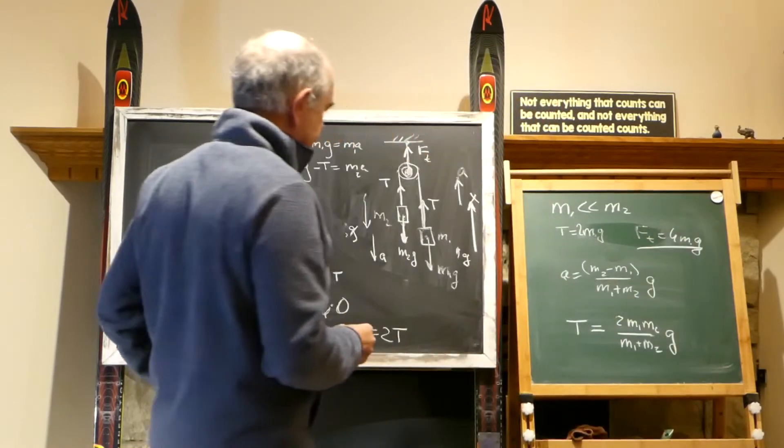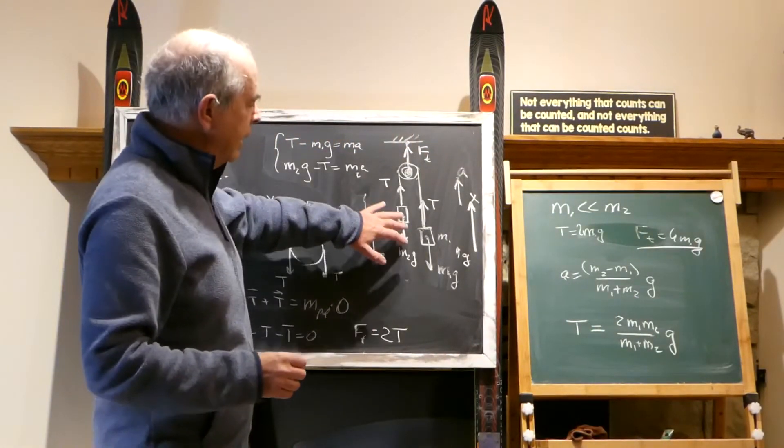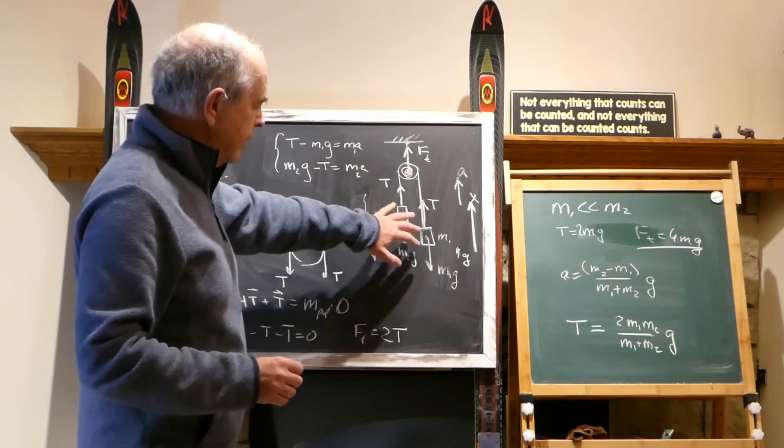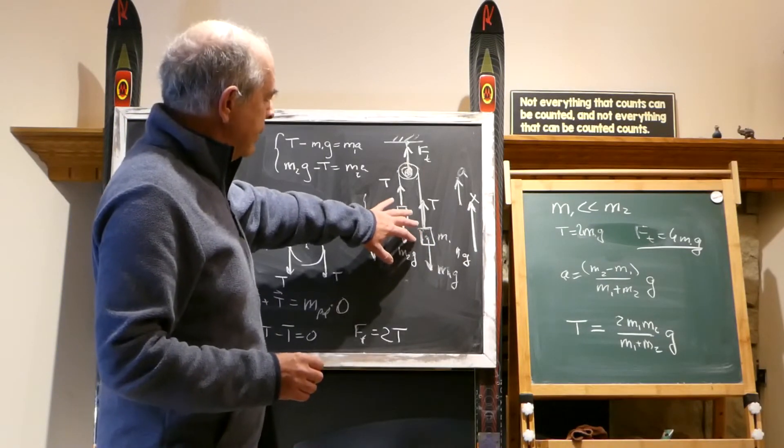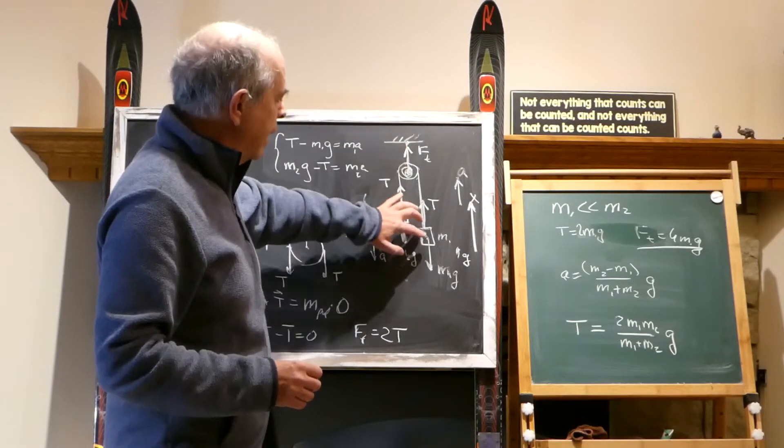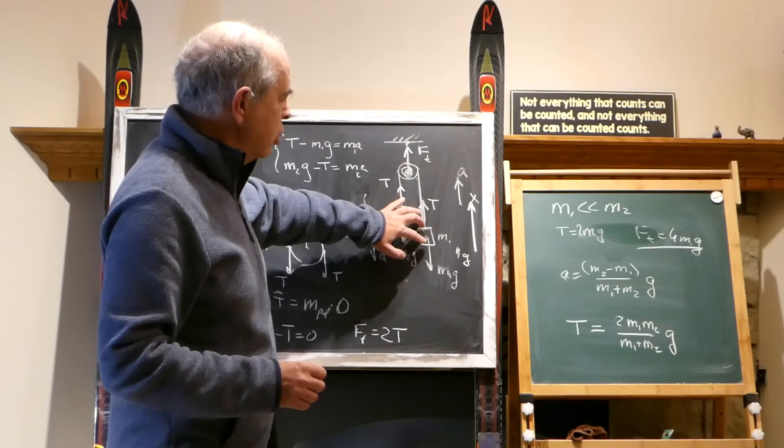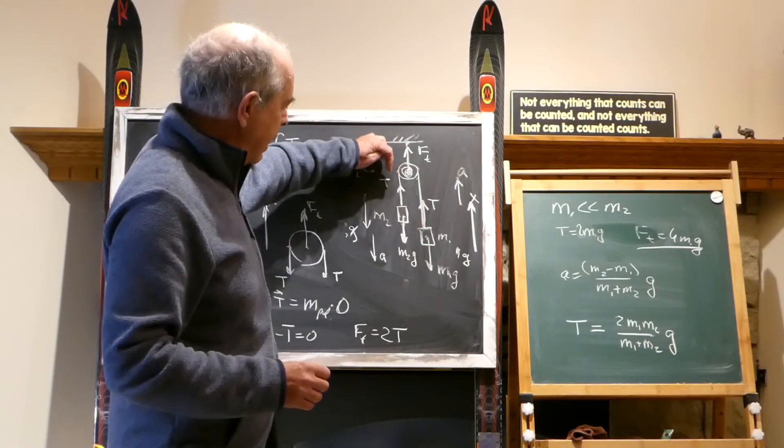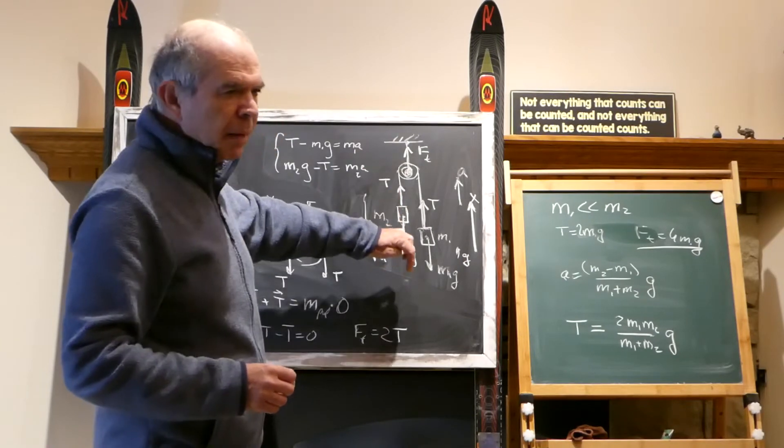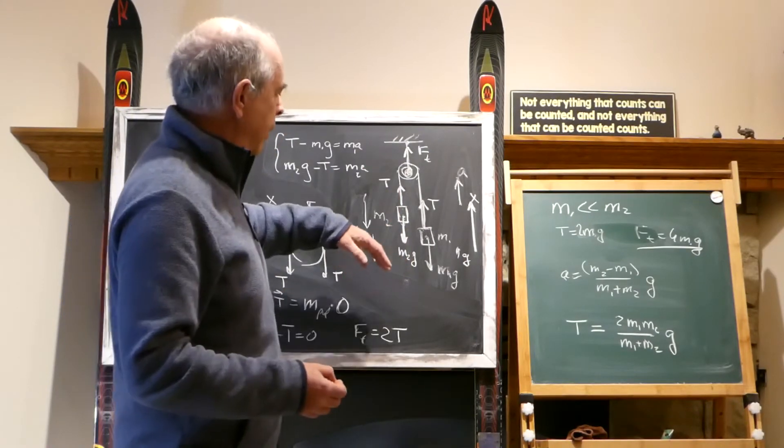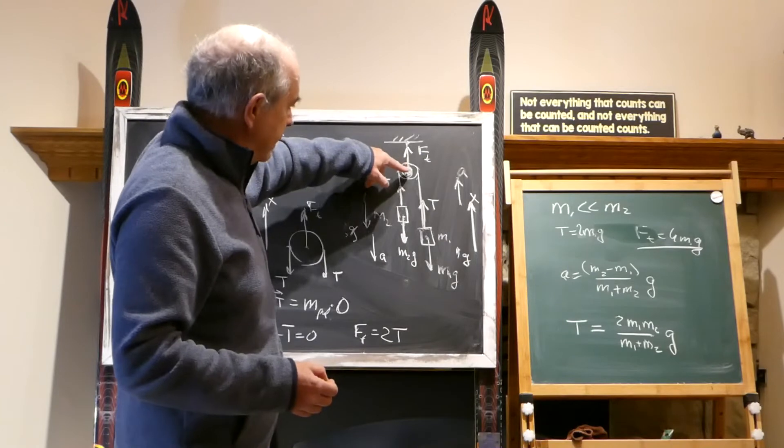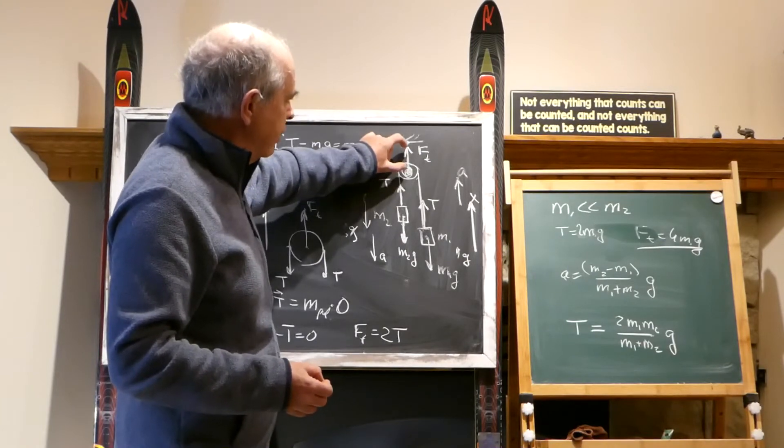But if this is 10 kilo and this is 10 grams, thousand times smaller, then this force would be 4 times M1g of this. And M2g will be falling practically freefall. But the force here still would be 4 times M1g of this.